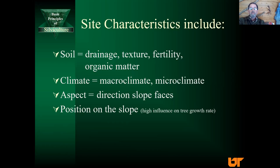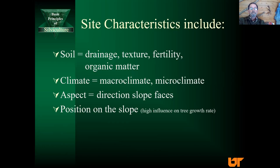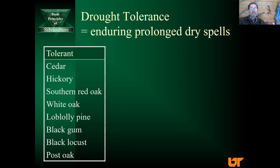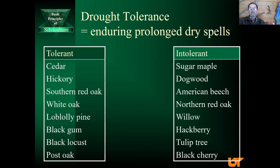Working with a forester, a forest management plan will include a tree planting plan taking all these things into consideration. Some species are tolerant of drought — they can endure prolonged dry spells, including cedar, hickory, white oak, and southern red oak. They may be slow starters but they can endure on drier sites better than other species. The other extreme would be trees intolerant to drought — on a dry site you don't want to plant northern red oak or tulip tree. They prefer mesic sites — middle of the soil moisture regime.